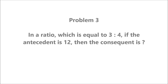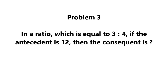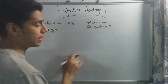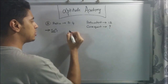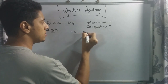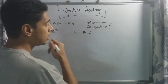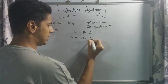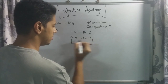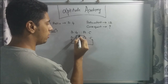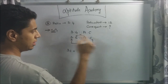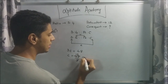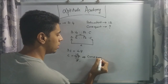Let's go to Problem 3. In a ratio equal to 3:4, if the antecedent is 12, then the consequent is? They've given the ratio 3:4, the antecedent is 12, and we need to find the consequent. I solve it using proportions: 3:4 = A:C, where A is the antecedent and C is the consequent. Substituting: 3:4 = 12:C. By the law of proportions, the product of the extremes equals the product of the means, so 3 × C = 4 × 12 = 48. Therefore C = 48/3 = 16. The consequent is 16.